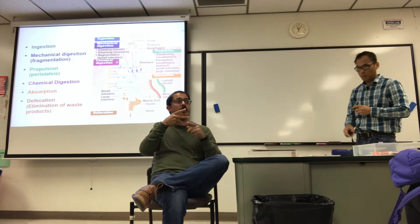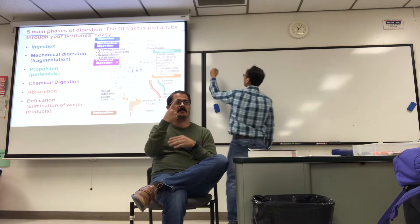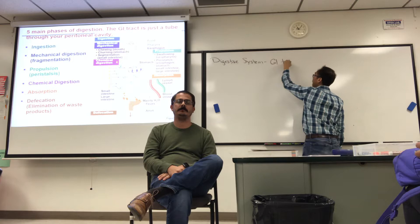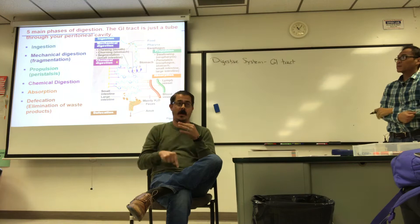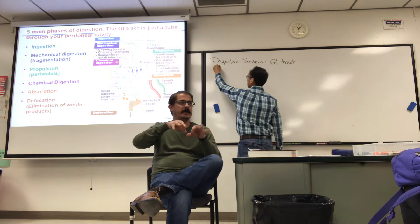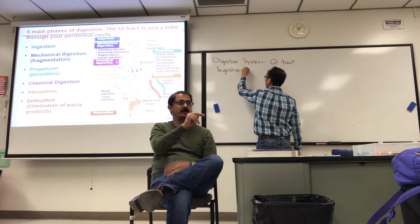Here's an overview of the main functions of the digestive system. The GI tract is simply a tube from mouth to anus, and along the way you secrete things into the digestive tract to facilitate digestion. The process can be understood by defining key terms. Ingestion means inserting food into the oral cavity — sticking it in your mouth.